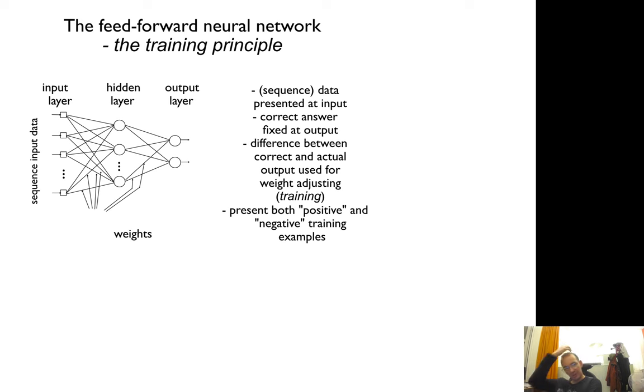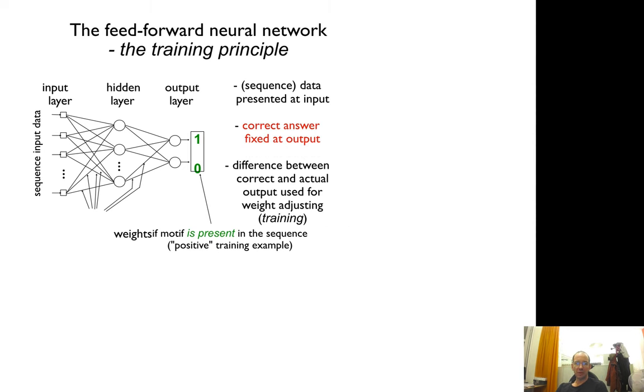Basically what you do in the neural network is you want to train it. You put in a lot of data, sequence data, or a model that you have, and then you present both positive and negative examples. They optimize these weights so that you can recognize the positive and negative examples. You can do what you call backpropagation. If the output is correct, you don't change it, but if it's wrong, you adjust the weights to better recognize these patterns.